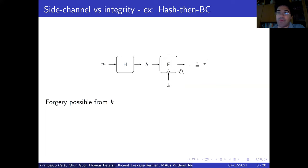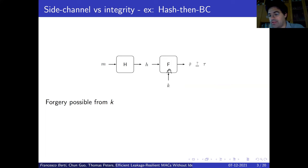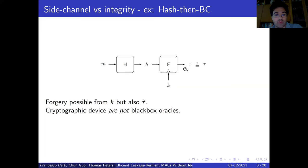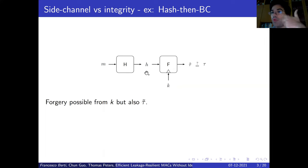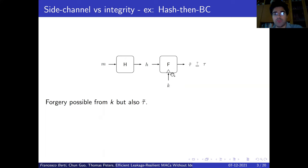We observe that via side channel, if we are able to recover the key, we can do everything, since all the security of a scheme is in the secrecy of the key. But in verification via side channel, the value tau-tilde may also be leaked. Obtaining tau-tilde means that you are able to forge, at least for this particular message. Note that usually when we put side channel protection on primitives like this block cipher, we protect the key, not the output. So it may be problematic if some outputs are leaked. Thus, cryptographic devices are not black-box oracles.